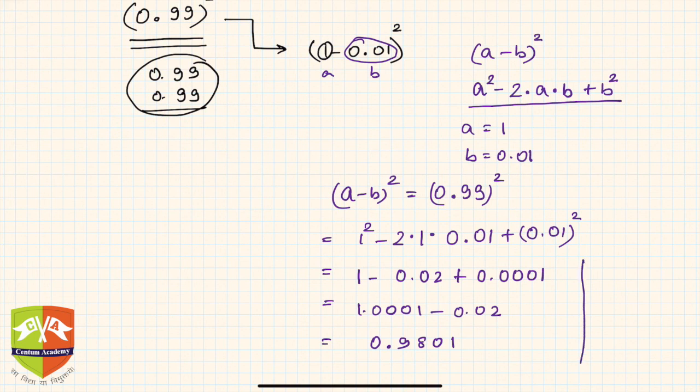So 1.0001, and then I have to subtract 0.02 from here. 1-0 is 1, 0-0 is 0, then 0-2, so you have to borrow. 10-2 is 8, so this 0 becomes 9. 9-0 is 9, and since you borrowed, nothing is left here.